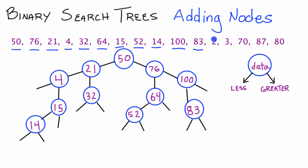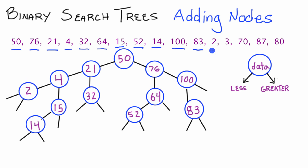Now we add node 2. 2 is less than 50, so we take the left pointer. 2 is less than 21, we take the left pointer again. 2 is less than 4, so we place node 2 there. Now we mark 2 off the list.